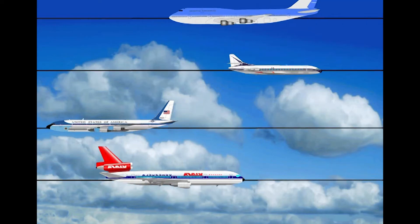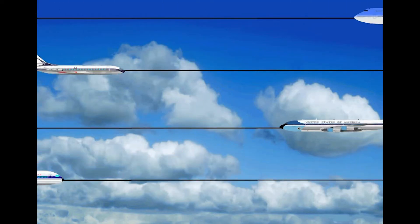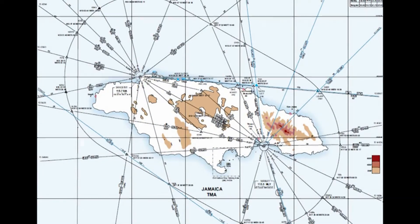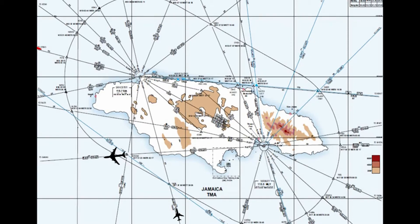Now looking at things from a different perspective — a bird's eye view with more context — this is the type of scenario you would see in an area control environment, which we'll look at later in another video when we discuss the different disciplines of air traffic control. Here we have aircraft flying on routes, almost like roads in the sky, similar to how a car travels on the ground. This would certainly be considered safe, orderly, and expeditious.